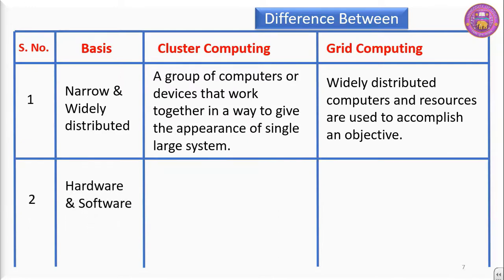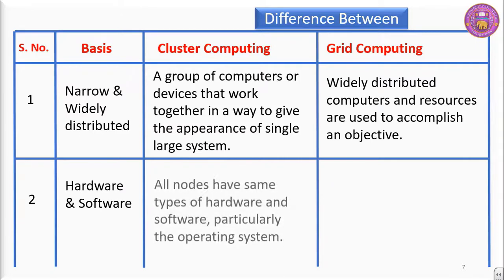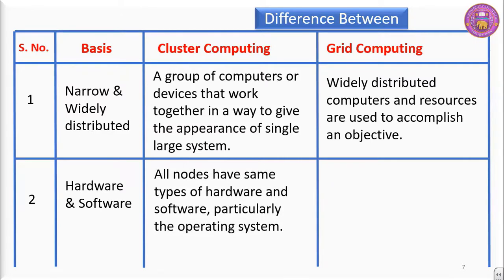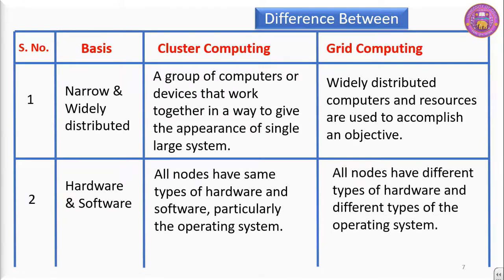Regarding hardware and software: in cluster computing, all nodes have the same types of hardware and software, particularly the operating system. In grid computing, all nodes have different types of hardware and different types of operating systems.